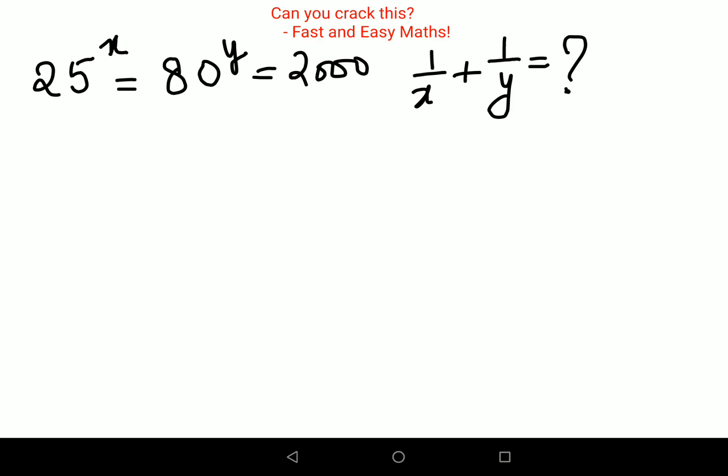This equals 2000 and we need to find the value of 1 upon x plus 1 upon y. Now understand, you can write this as nothing but 25 raised to x equals 2000, correct?